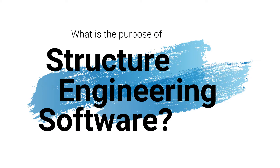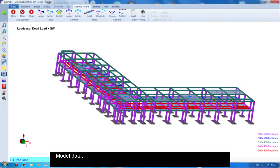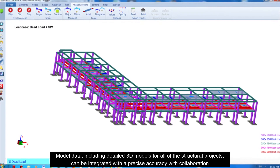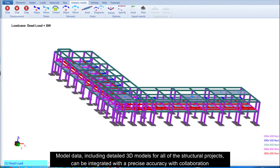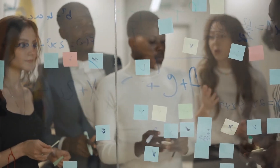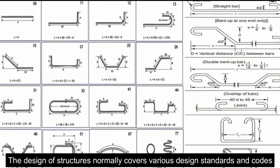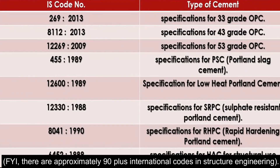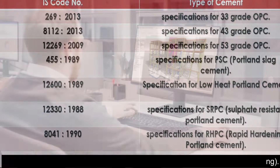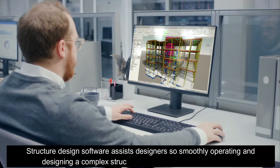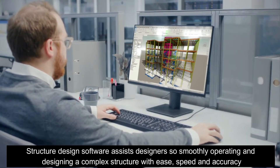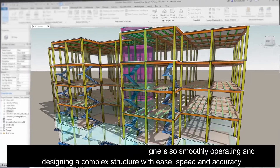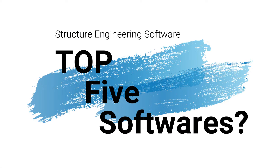What is the purpose of structural engineering software? Models including detailed 3D models for all structural projects can be integrated with precise accuracy through collaboration by the whole design team. The design of structures normally covers various design standards and codes — there are approximately 90 plus international codes in structural engineering. Structural design software assists designers in smoothly operating and designing complex structures with speed and accuracy. What are the top five structural engineering software?